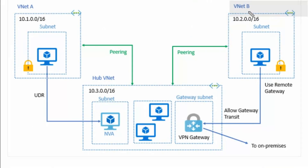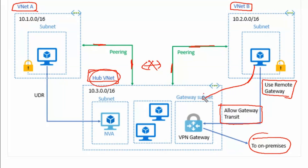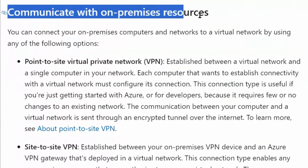Let's understand how peering works in the diagram. Virtual network B can be peered with virtual network A using a hub virtual network. VNet B is peered with the hub virtual network and VNet A is peered with the hub virtual network, but these two are not directly peered. The hub virtual network has a VPN gateway connecting to an on-premise data center. Resources in virtual network B can use the gateway of the hub virtual network to communicate with on-premises data centers as well as peered virtual networks.